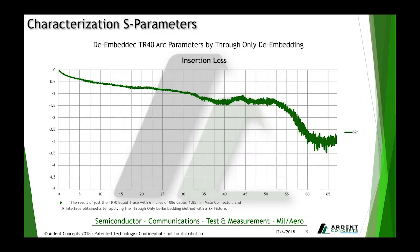Here is our measured insertion loss data — very linear. You get a little bump around 40 GHz, but -3 dB all the way to 65 GHz is very good. This is the result of a TR Equal Trace with six inches of 086 cable and 1.85 millimeter male connectors on the end, as well as the TR interface, obtained by applying the through-only de-embedding method with a 2x fixture. The signal loss is largely due to the cable itself, as flexible cable is inherently a bit lossy — the shorter cable you go with, the less loss you'd experience.